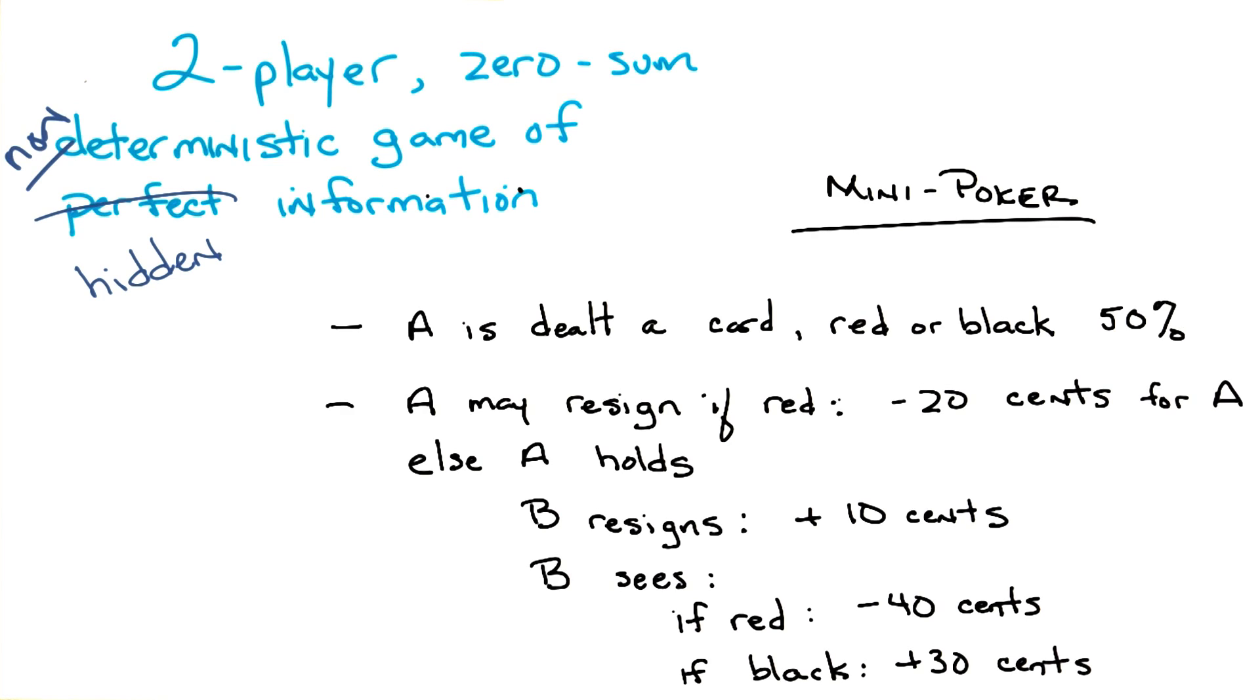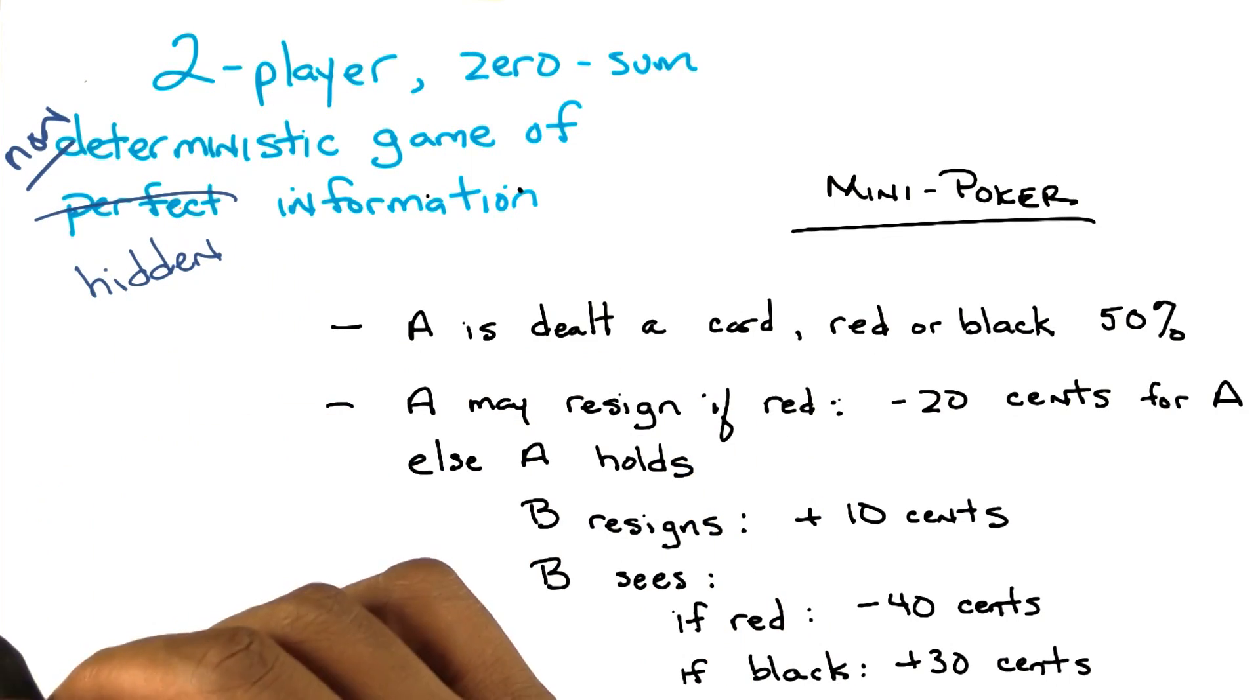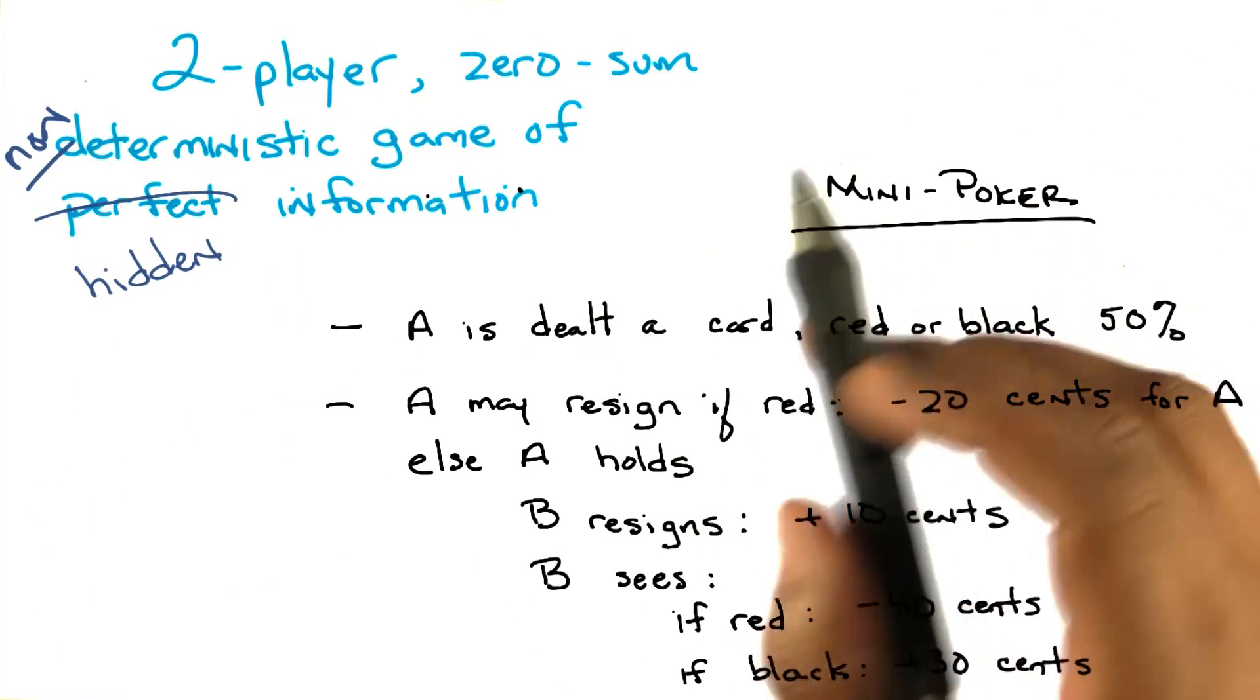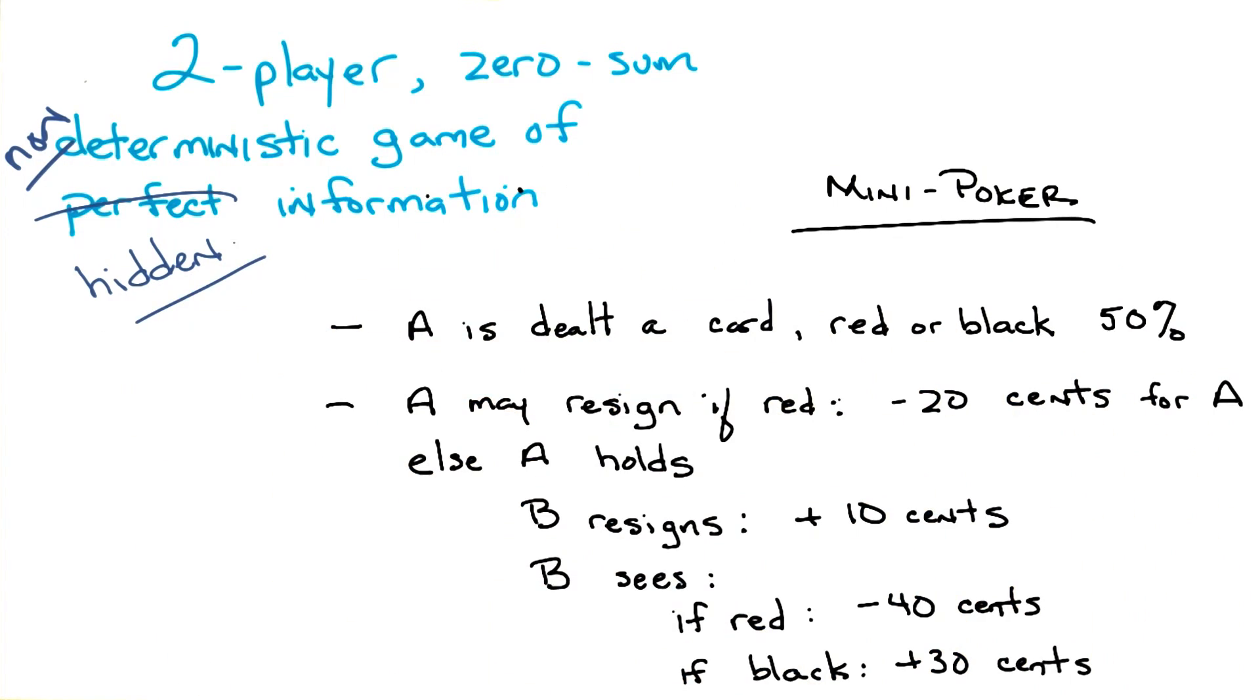And then what we did last time, just a few seconds ago, is we relaxed the deterministic part. So we had two players, zero sum, non-deterministic games of perfect information. And now, we are going to relax the requirement for perfect information. So now we're going to look at two player, zero sum, possibly non-deterministic games of hidden information.